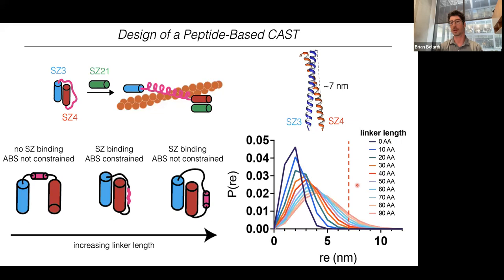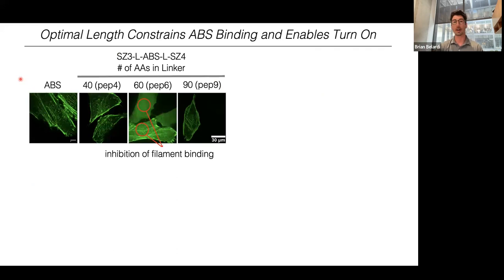To predict how many linker amino acids we'd need, we used the worm-like chain model to model linker length, with our 7 nm cutoff. We found that about 50 amino acids would be needed to span the distance between the C-terminus of Synzip 3 and N-terminus of Synzip 4. We then screened different constructs in cells: Synzip 3, followed by some linker amino acids, the actin-binding sequence, more linker amino acids, and then Synzip 4. If the CAST is not in the off state, it decorates actin filaments.